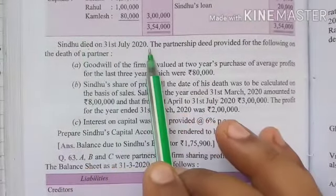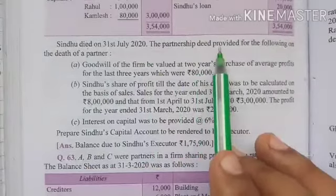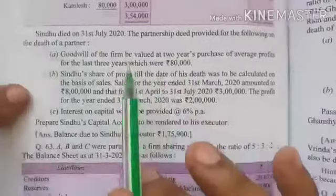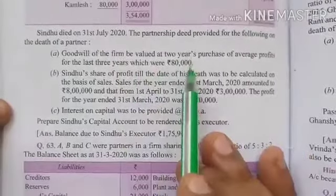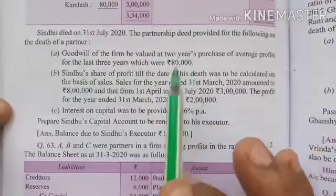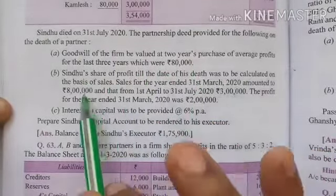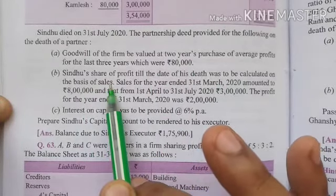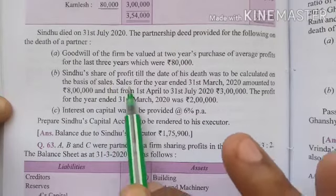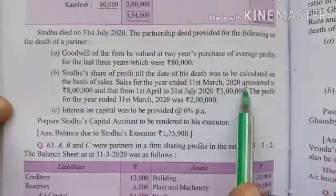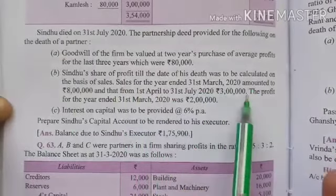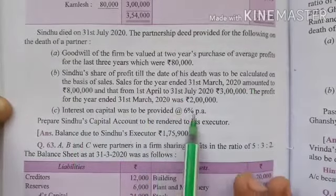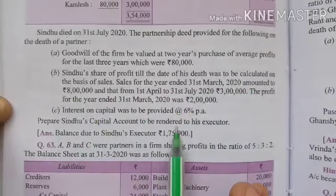Further, Sindhu died on 31st July 2020. The partnership deed provided for the following on death of a partner: First, goodwill of the firm to be valued at two year's purchase of average profit for the last three years. Sindhu's share of profit till the date of death was to be calculated on the basis of sales. P&L is calculated by two methods: on time basis and on sales basis. Sales for the year ended 31st March 2020 amounted to 8 lakhs, and from 1st April to 31st July the sales were 3 lakhs. The profit for the year ended was 2 lakhs. Interest on capital was to be provided at 6%. Prepare Sindhu's capital account to be rendered to the executor's account.